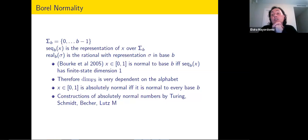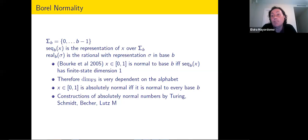Absolutely normal numbers happen to be very useful for cryptography — I think they are called 'up your sleeve' randomness. They have been built from Turing at the beginning of the 20th century. Schmidt also had a very interesting construction. More recently, several people have looked at this problem of constructing absolutely normal numbers from different perspectives. For instance, Veronica Becher has tried to construct absolutely normal numbers that converge very quickly. We have also constructed an absolutely normal number trying to make this the fastest possible — nearly linear time.